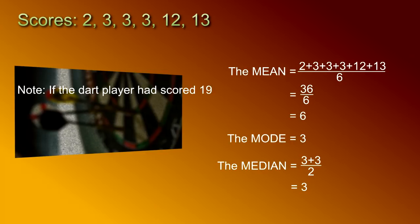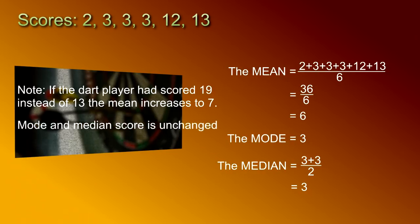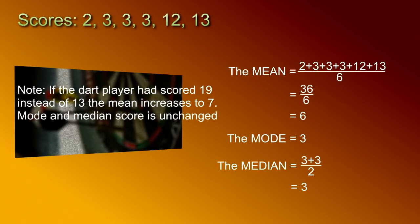Notice that if the dart player had scored 19 instead of 13, the mean increases to 7, but the mode and the median remain unchanged.